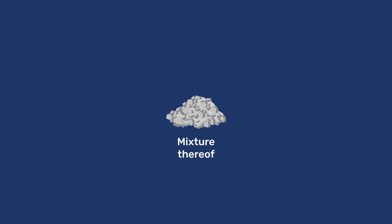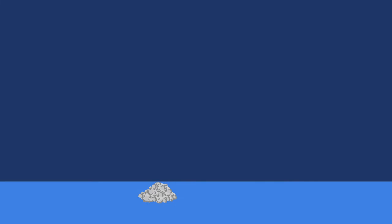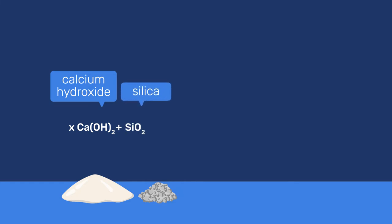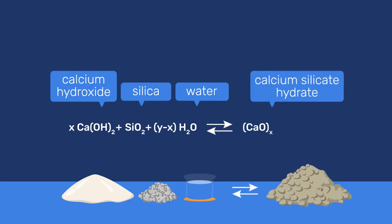To explain the pozzolanic reaction, the easiest and most basic way is to consider an amorphous silica as pozzolan. With this, our reaction can be written as x moles of calcium hydroxide plus 1 mole of silica plus (y-x) moles of water react to produce 1 mole of calcium silicate hydrate, noted (CaO)x(SiO2)(H2O)y.